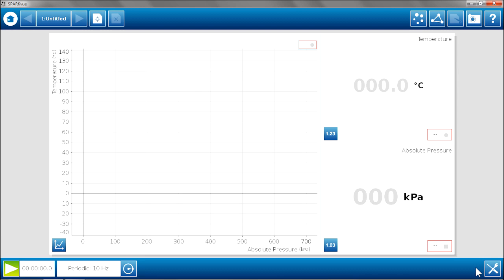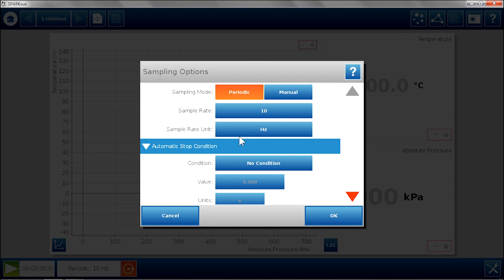Now I am almost ready to start collecting data. I want to do this in manual sampling mode. I want to make sure my values are stable before I collect a point. I am going to change the sampling option to manual. Now I am ready to start collecting data.